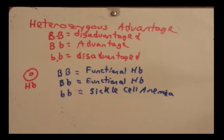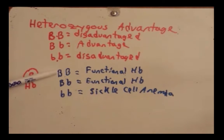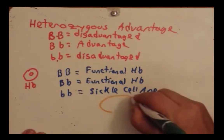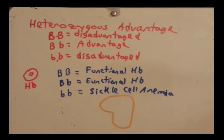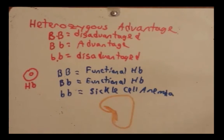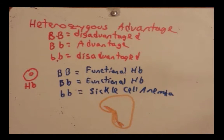You might argue right now that the heterozygote doesn't have an advantage — what I just described is that it's the same as the homozygous dominant. Well, the catch here is it depends on where you are. In certain regions of Africa, there are high incidences of malaria. Malaria is a disease carried by insects that transmit a parasite which infects humans and begins to destroy red blood cells, and can lead to death if not treated appropriately.